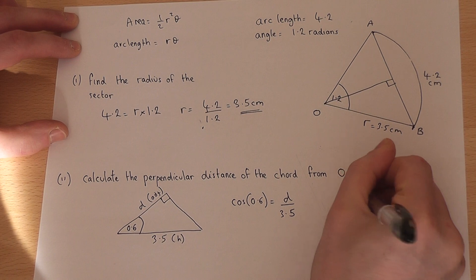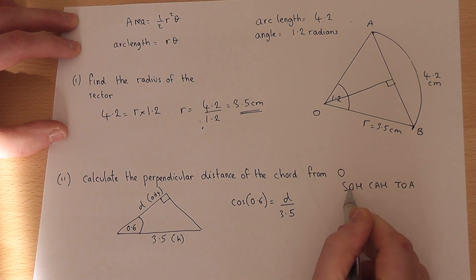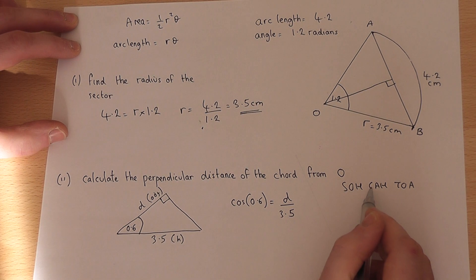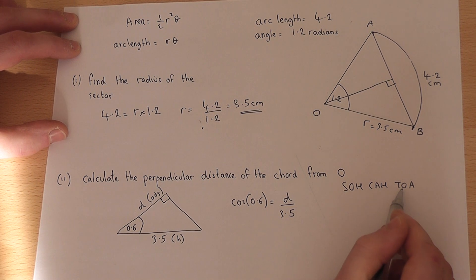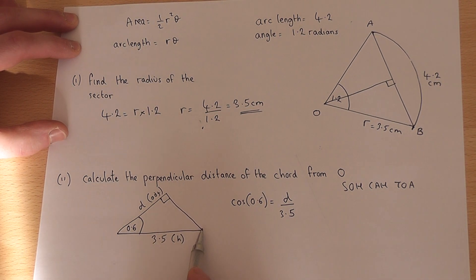A reminder about SOH CAH TOA: sine is opposite over hypotenuse, cos is adjacent over hypotenuse, and tan is opposite over adjacent. I've got the adjacent and the hypotenuse in the question.